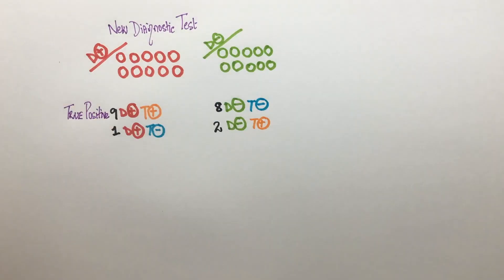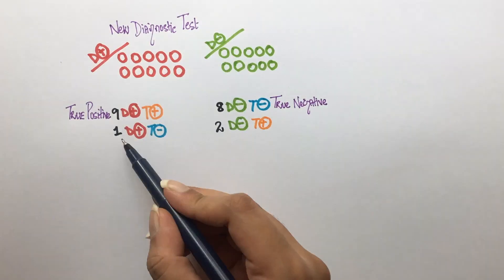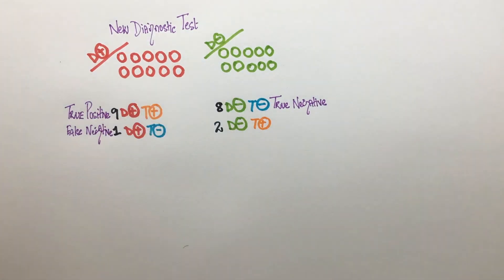Out of this bunch, eight people who don't have disease X are correctly tested negative so they are true negatives. This one person who actually has the disease is falsely given the result as negative so this person will be classified as false negative.